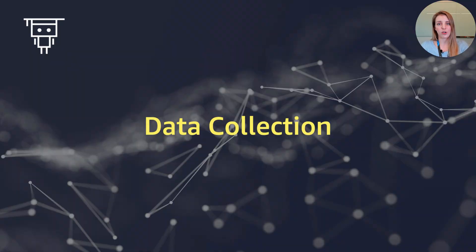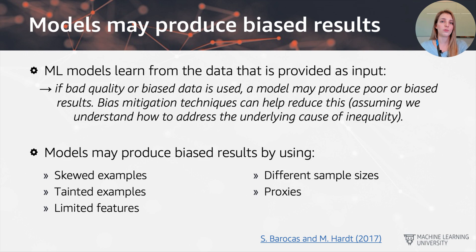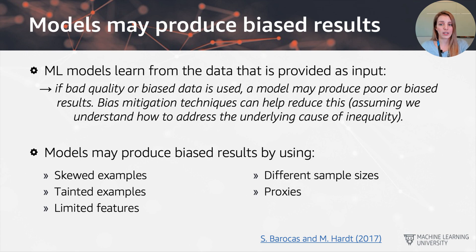Moving on to the data collection stage. This brings us to one of the potential sources of bias in the machine learning solution. There are multiple potential sources of bias, but the first one really comes from the dataset itself. The key components of the machine learning model are the dataset and the algorithm, and each of these can become a source of potentially biased results. Machine learning models learn from the data provided as input, so if we have bad quality or biased data as input, the model may end up producing poor or biased results as output. We will look at different bias mitigation techniques to help reduce this unwanted bias.